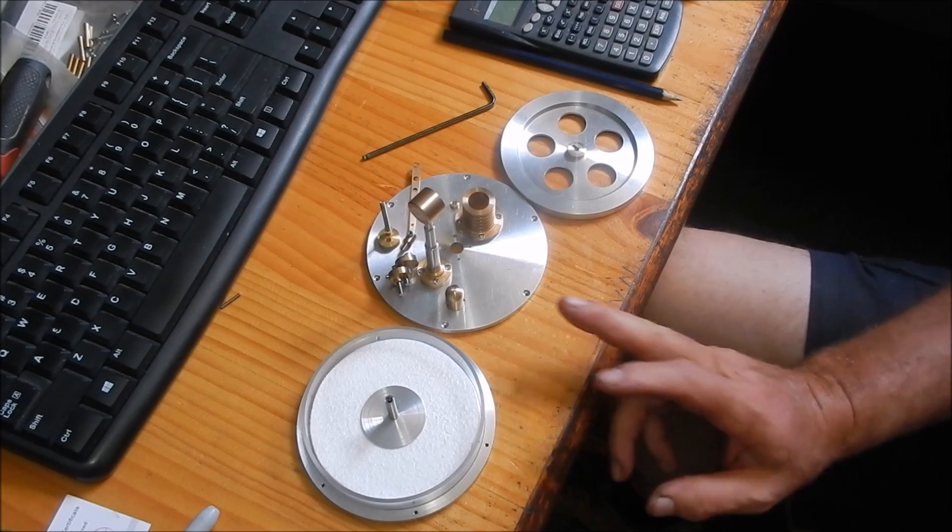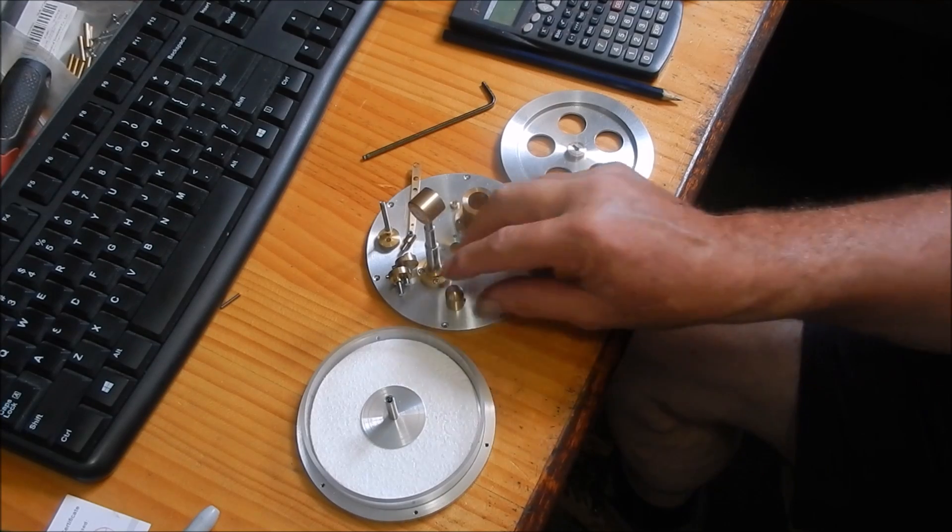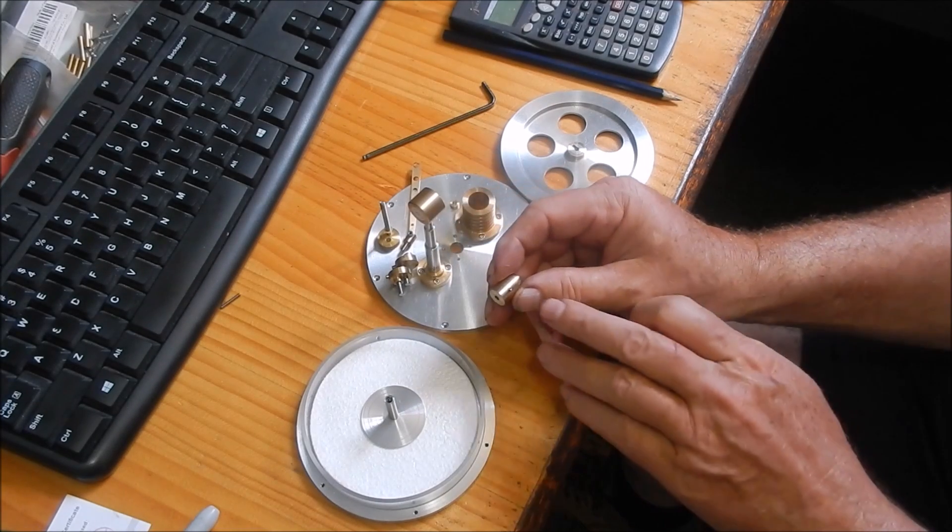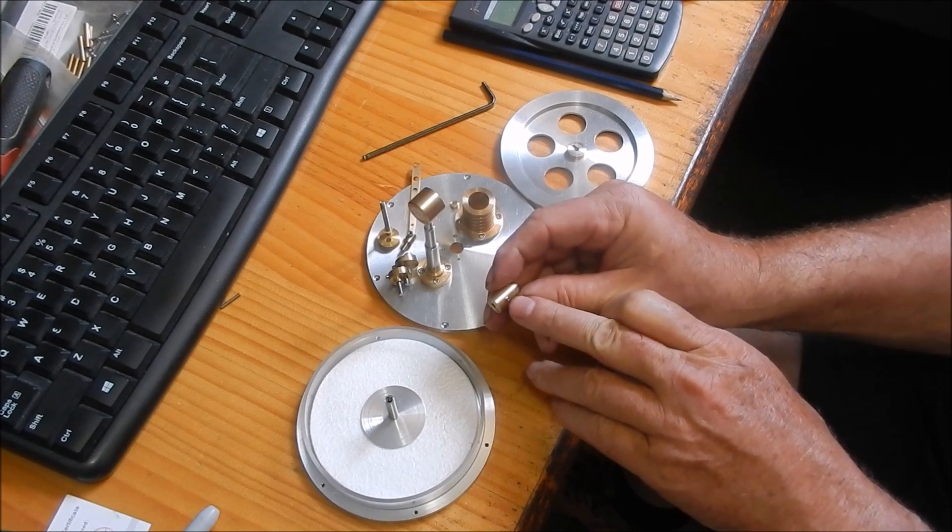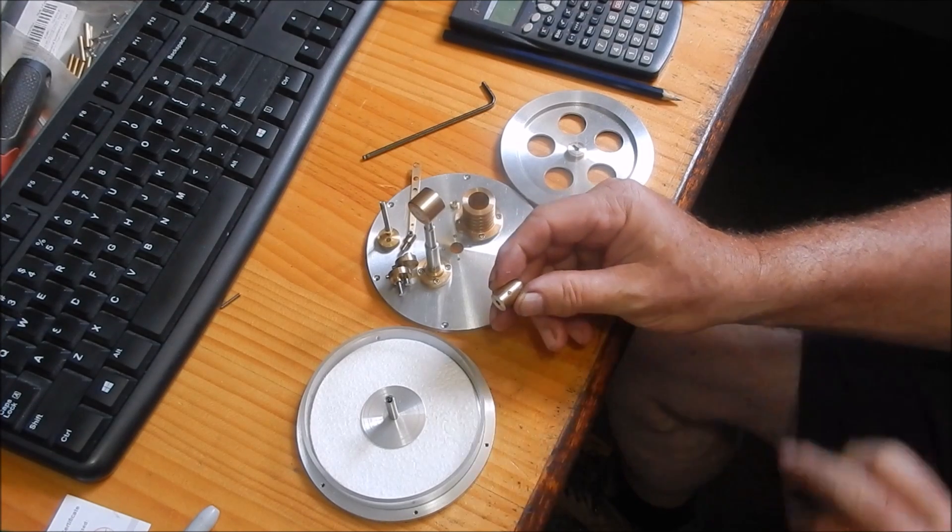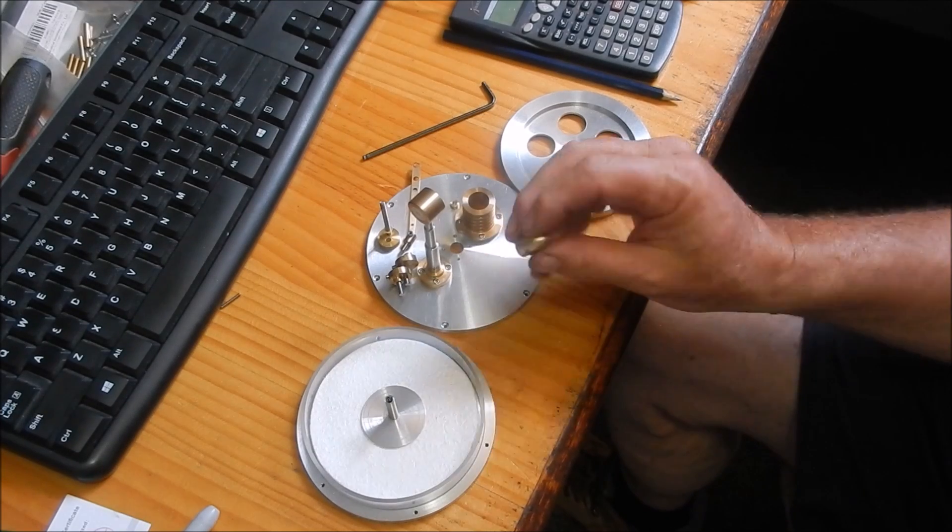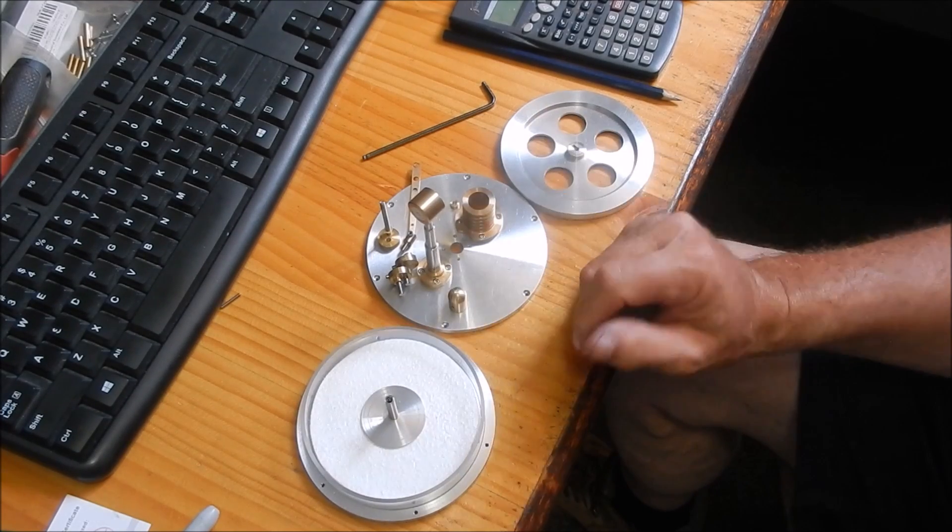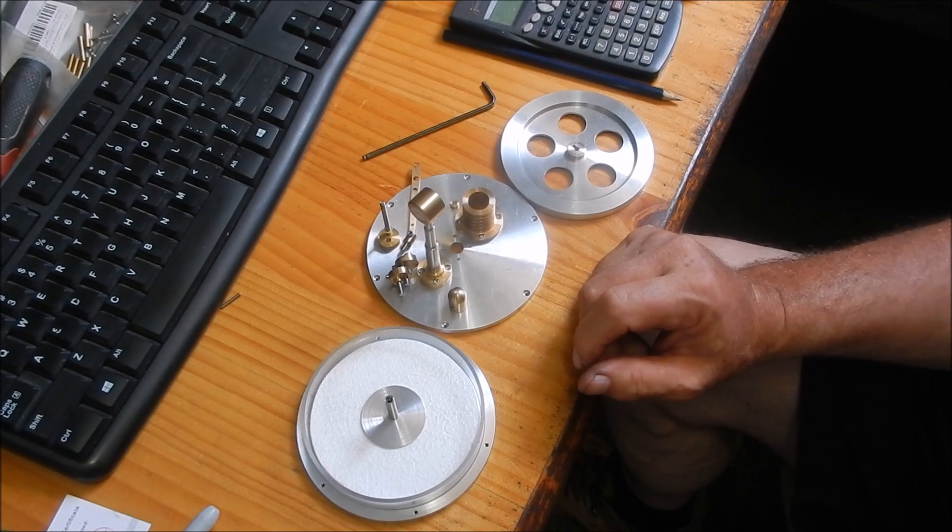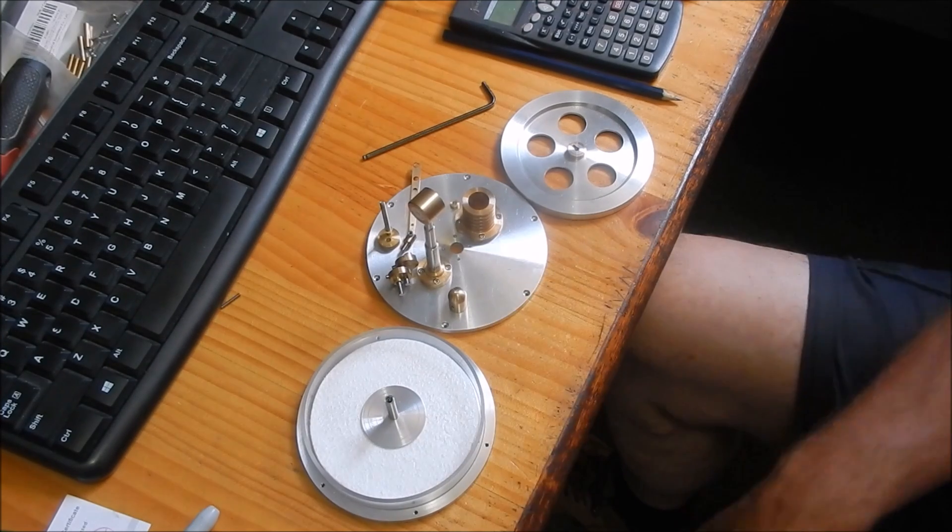I've got a little bit more work to do on this. I'm waiting for some allen keys to come in for the very fine M2 grub screws. It's a 0.9 millimeter hex allen key and I can't complete it to get the timing set until I've got that, but it's getting very close.